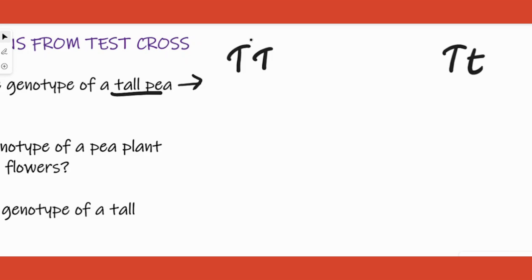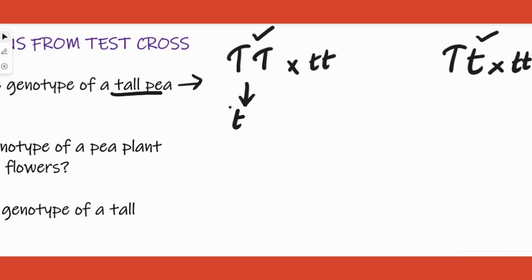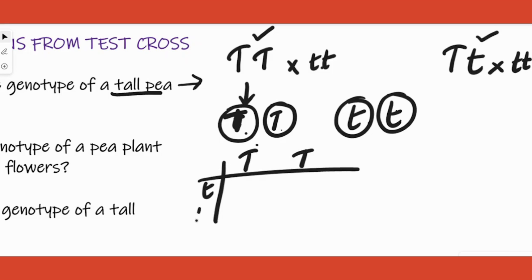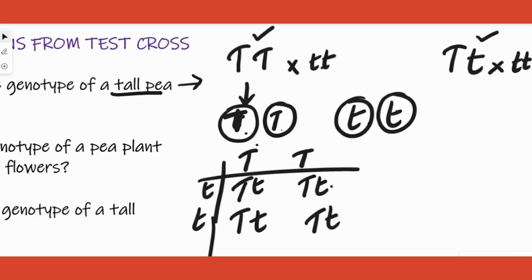Here you have a tall pea plant — it is either TT or Tt. Both options need to be crossed with the recessive trait (tt). First, identify the gametes. For TT crossed with tt, you make a Punnett square using T and T from one parent and t from the other. You observe that all the progenies are tall, which indicates the initial tall pea plant is homozygous dominant (TT).